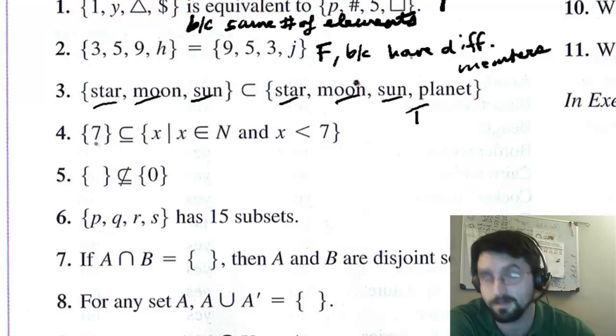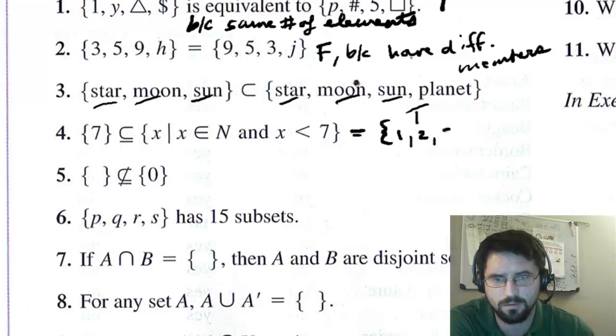Now, here we have the set containing the number 7, is a subset of the set of values such that those values are natural numbers, and all of them are less than 7. The problem here is there's no equal sign, right? So if we write this set here in roster form, this set here is 1, 2, 3, 4, 5, 6. And you can see 7 is not a subset of that set. So this one is false.